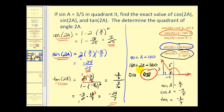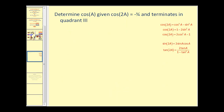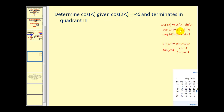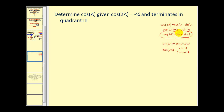Let's take a look at another problem where we use the identities in reverse order. We want to determine cosine of angle A, given that cosine two A equals negative three-fourths and angle two A terminates in the third quadrant. Looking at the identities, we can find cosine A from cosine two A using the identity involving two cosine squared A minus one.